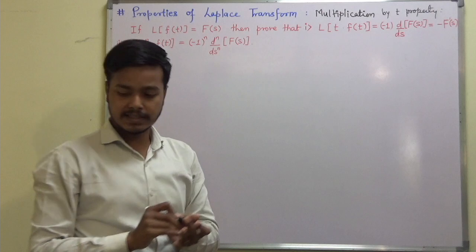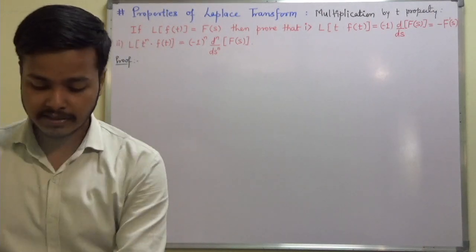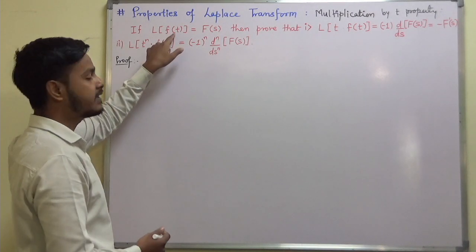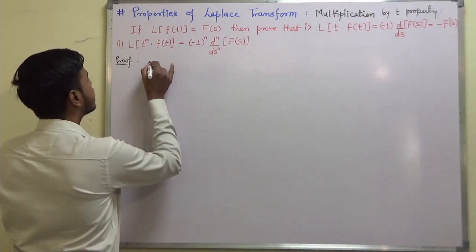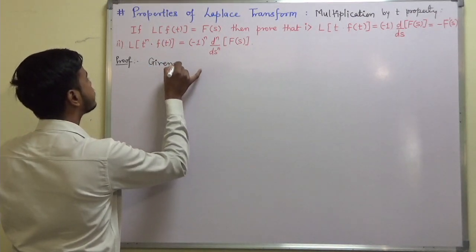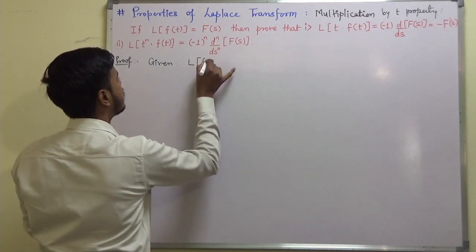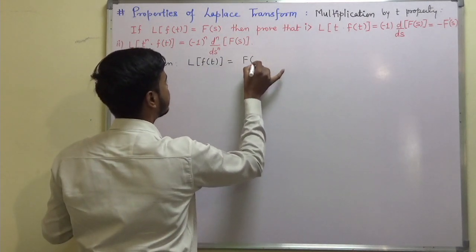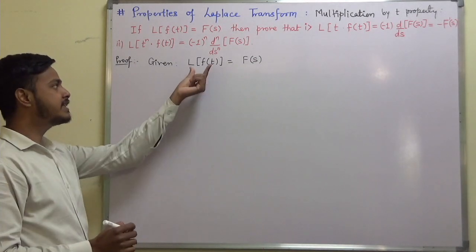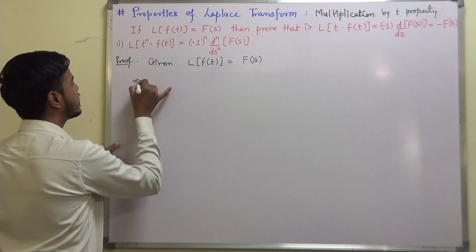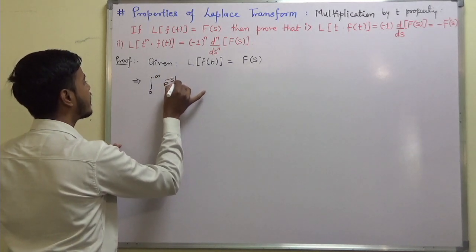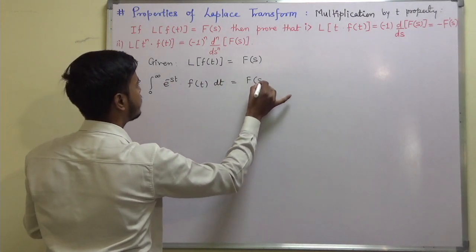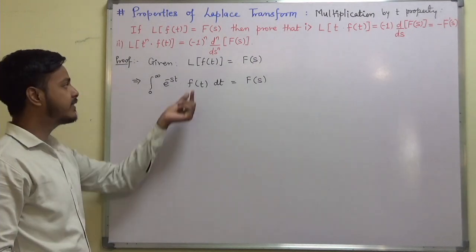Now let us see the proof of this property. We start with what is given: the Laplace transform of f(t) is F(s). Mathematically, this means the integral from 0 to infinity of e^(-st) · f(t) dt equals F(s).